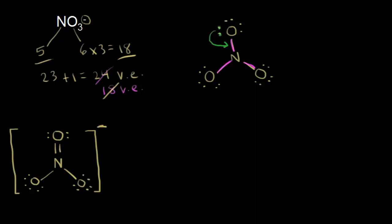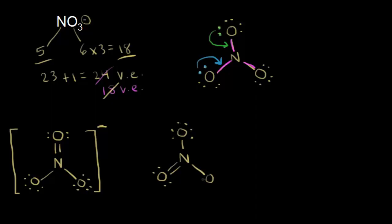We didn't have to take a lone pair from the top oxygen — we could have taken a lone pair of electrons from the oxygen on the bottom left. So if those electrons in blue moved in, we could draw another equally valid dot structure, showing this bottom-left oxygen double-bonded to nitrogen with only two lone pairs, while the top oxygen and bottom-right oxygen each remain single-bonded with three lone pairs. Let's go ahead and put our brackets with a negative charge.